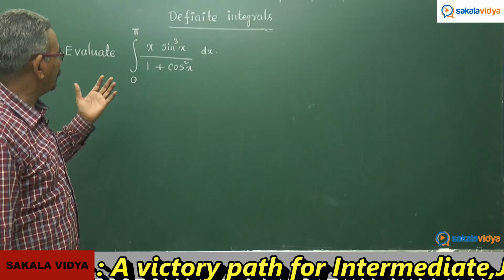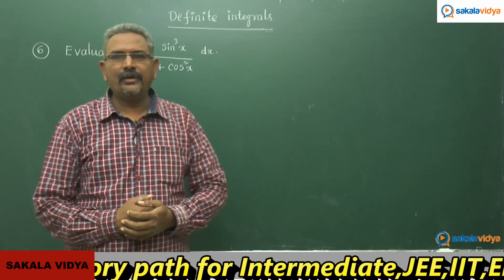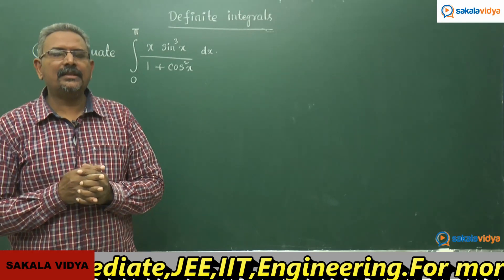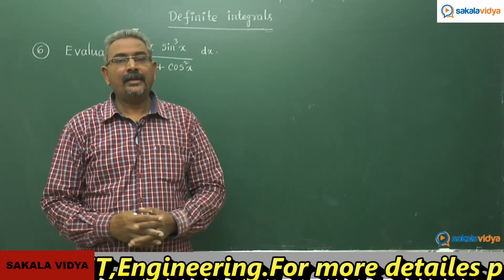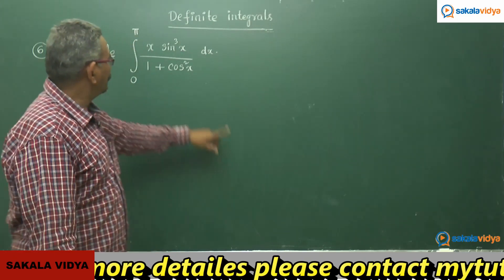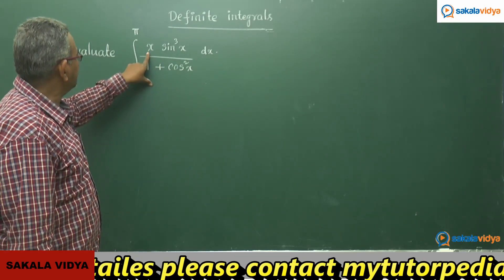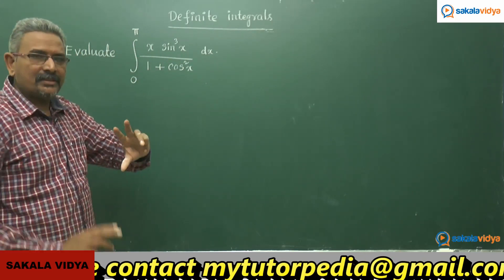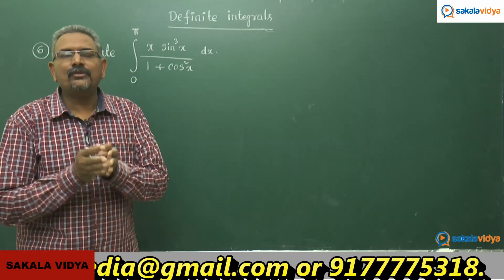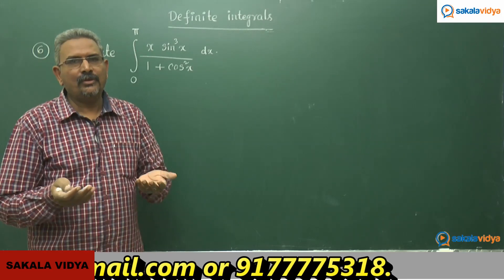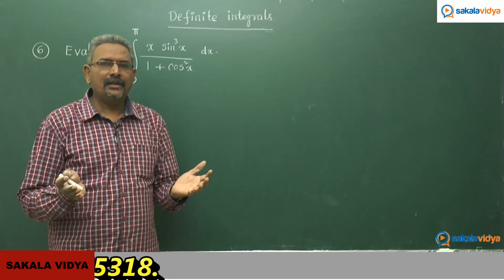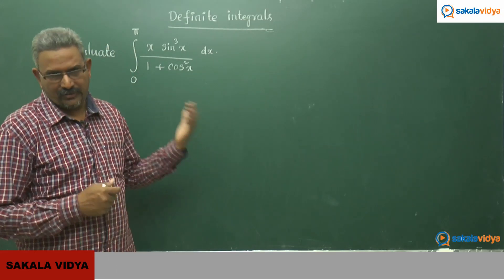What kind of strategy has to be followed for this problem? The very simple formula we have to use is: integral 0 to a of f(x) dx equals integral 0 to a of f(a minus x) dx. That means, in place of x, we replace x with pi minus x to get another integral equal to I. If you add both, you will get the I value. After that, indefinite integration has to be applied, and then we apply the limits to get the answer.